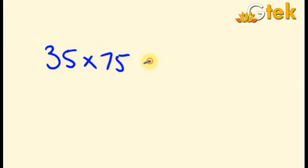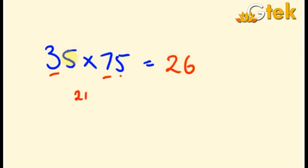Let us see another example. I am going to take the equation 35 into 75. My idea is that 3 into 7 is 21, then 3 into 7 is 21 plus the 5 over here. So 21 plus 5 is 26 — and 5 into 5 is 25.